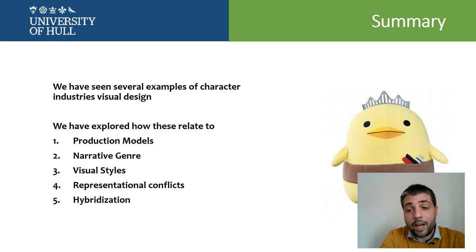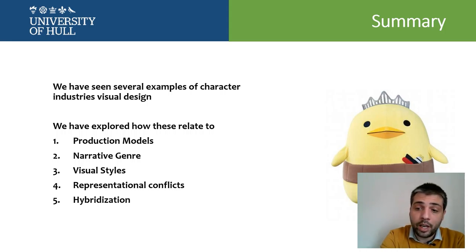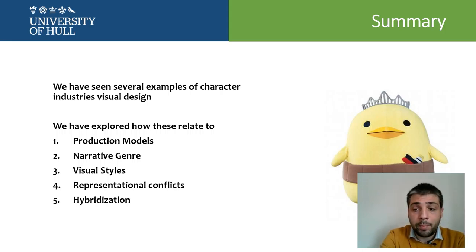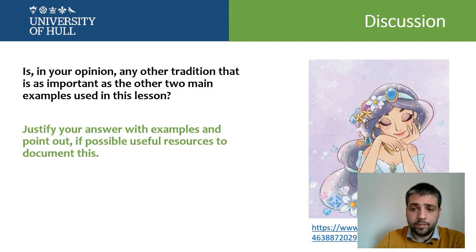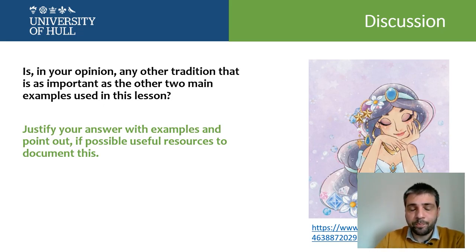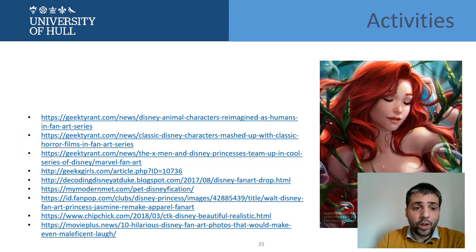We are in a world of hybridization, so it is difficult to see everything as two or three types of character design, but it was important to talk about this in terms of character industries. So far we have explored how these character industries relate to production models, narrative genre, different traditions within movies or comic books. We have also talked about visual styles, different terms used in relation to these industries, some representational conflicts when talking about how industries represent particular groups including gender. We'll come back to this topic in the lesson on diversity, and we have talked about the concept of hybridization.